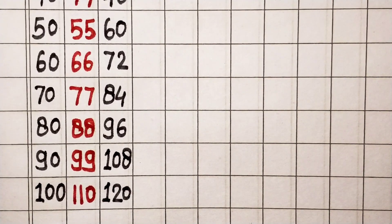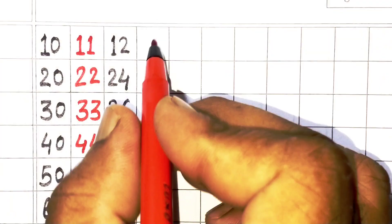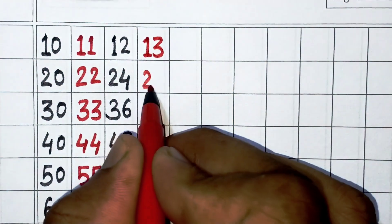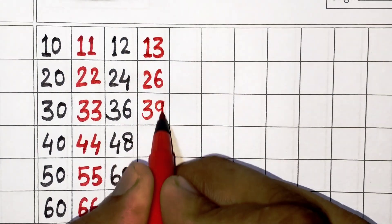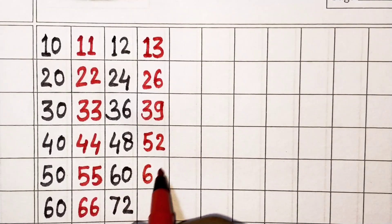Next, 13. 13 times 1 is 13, 13 times 2 is 26, 13 times 3 is 39, 13 times 4 is 52, 13 times 5 is 65.